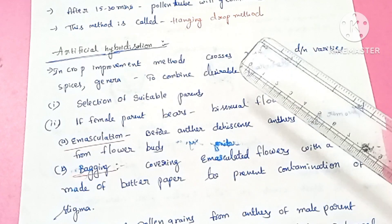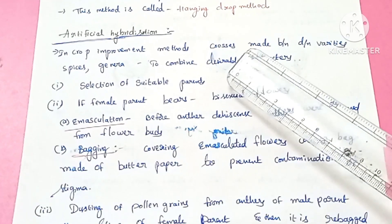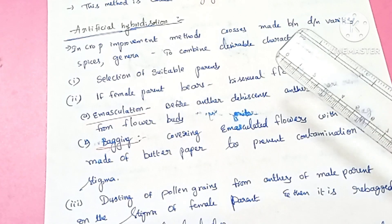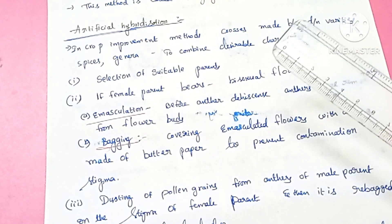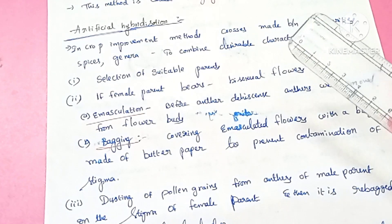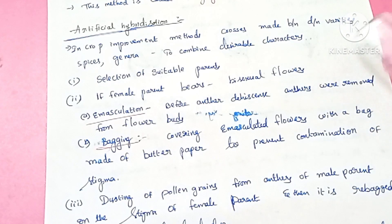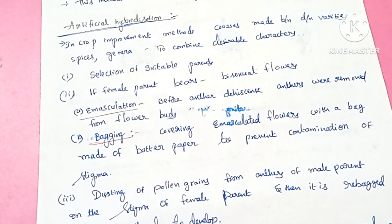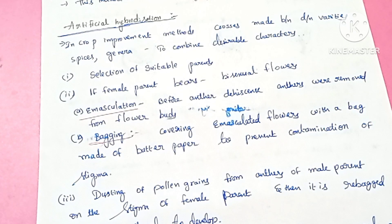The steps involved in artificial hybridization are as follows. First, we select suitable male and female parents. If the female parent has bisexual flowers — meaning both androecium and gynoecium are present in the same flower — we follow two methods: emasculation and bagging. Emasculation is the removal of the anthers before dehiscence. Dehiscence means the shedding of pollen.